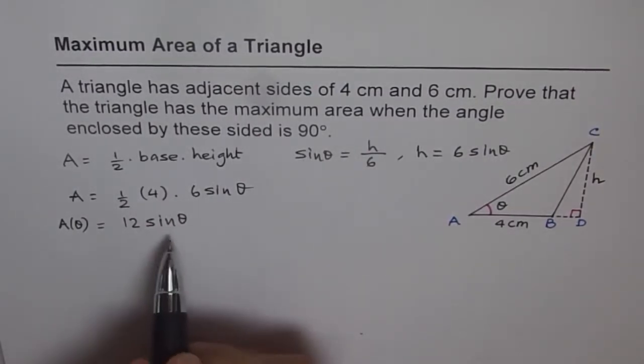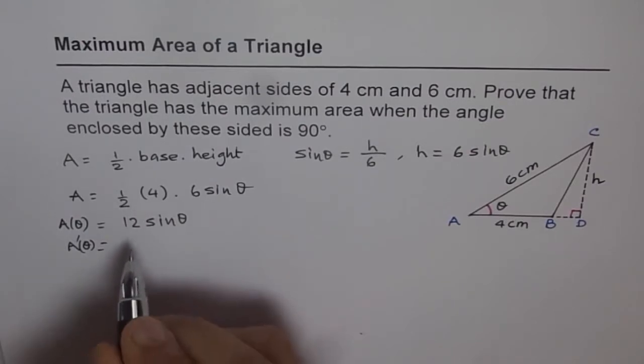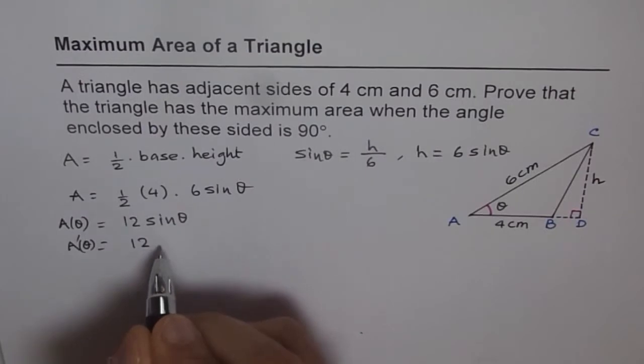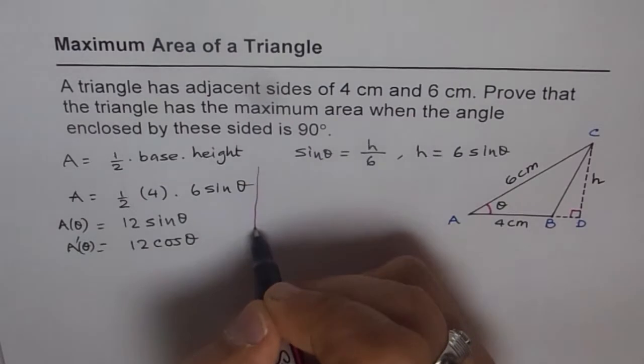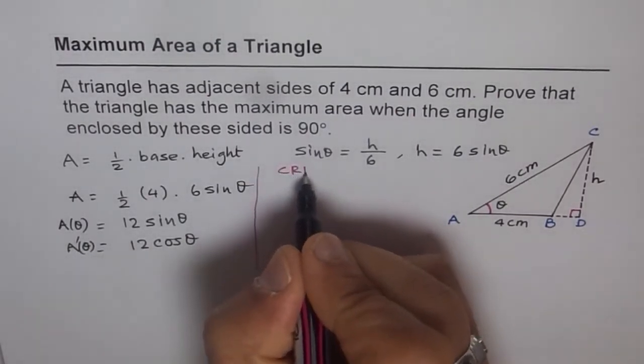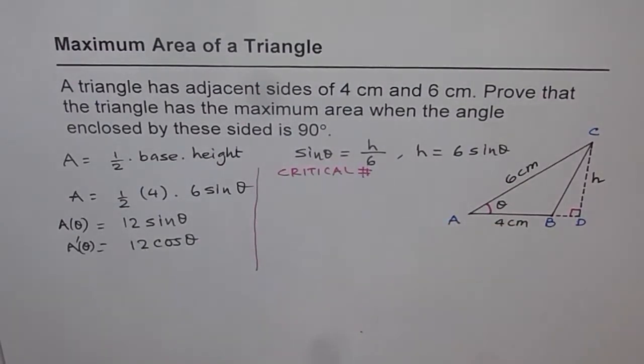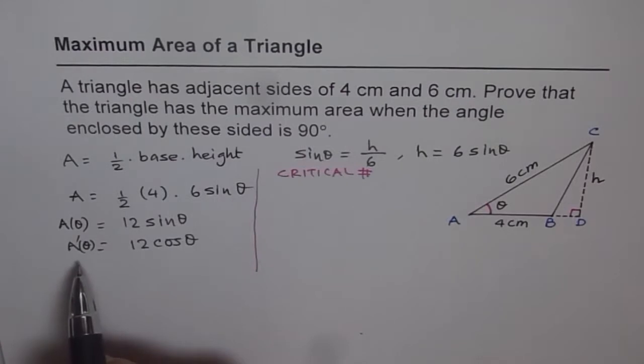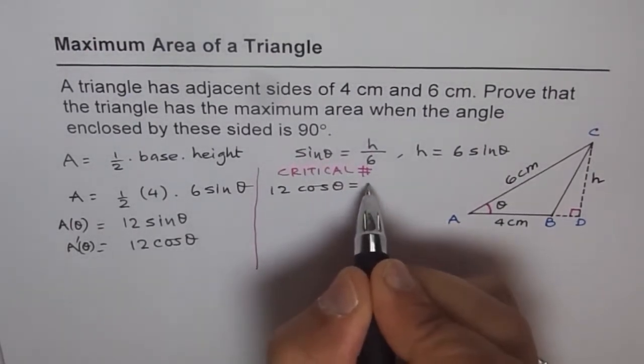Now if we differentiate both sides with respect to theta what do we get? We get A dash theta as a function of theta is derivative of sin theta is cos theta. So we get 12 cos theta. Now to maximize this, let's find critical point or critical number. So for critical number we know the derivative or rate of change of angle should be 0, or 12 cos theta should be equal to 0.